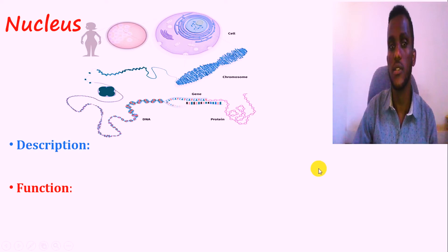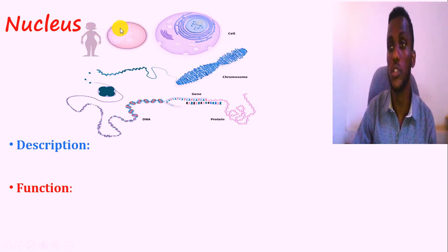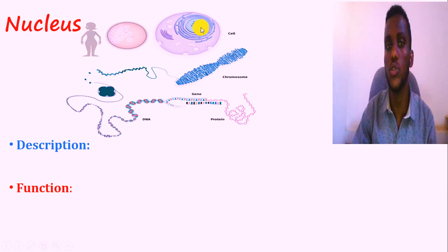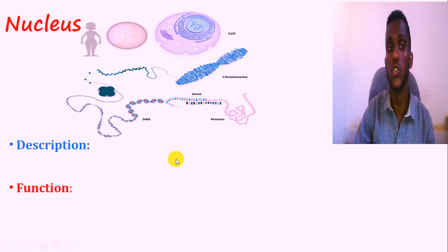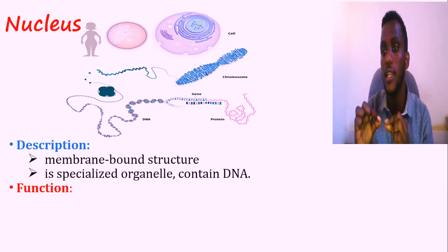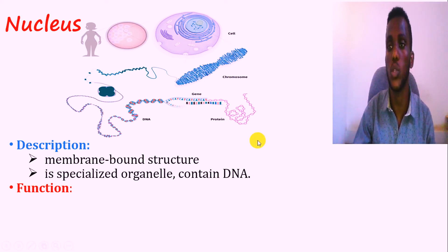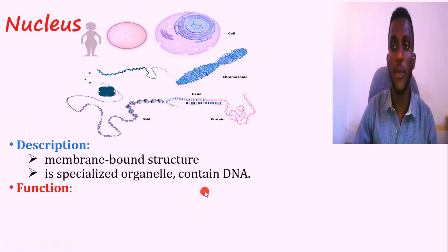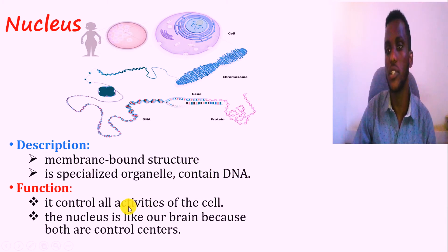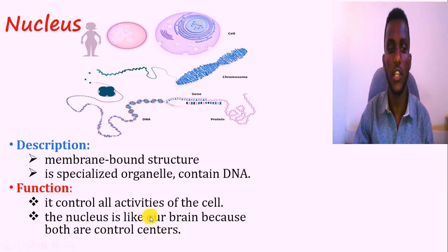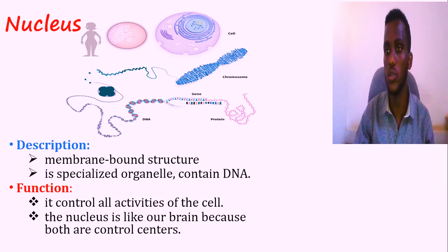The other organelle is the nucleus. The nucleus is found in multicellular organisms and single cells. The nucleus is the center — the organelle that contains chromosomes, which are made of DNA. So this is the membrane-bounded, specialized organelle that consists of genetic material or DNA. The main function of the nucleus is to control all the activity of the cells. So this is the brain of the cell.